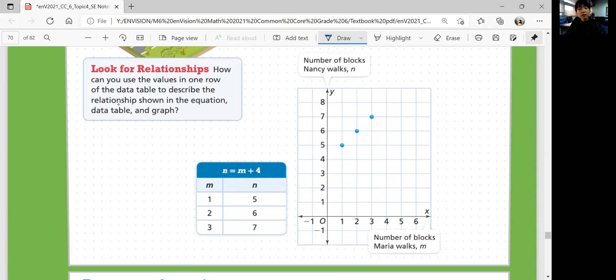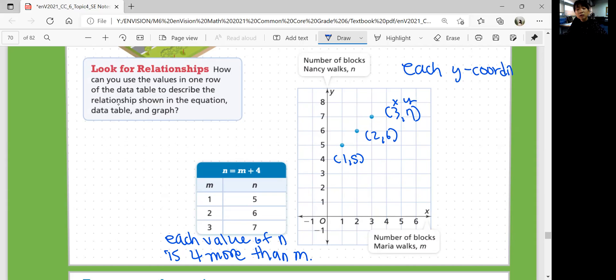What can we say? Each value of n is four more than m. And also, looking at this graph, what can you say? Each y-coordinate, so this is the y-coordinate. That's 1, 5, 2, 6, 3, 7. That's x and y, right? So, each y-coordinate is four more than the x-coordinate.